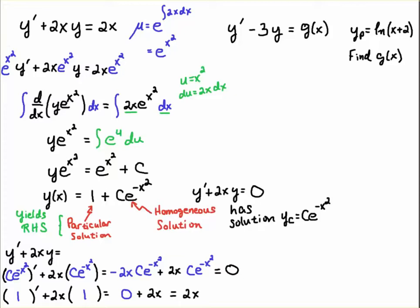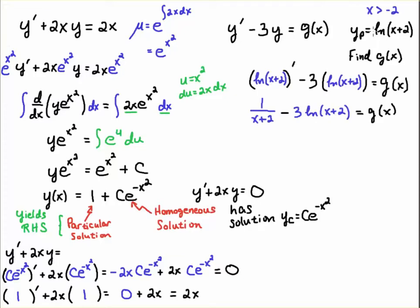Let's take a look at the example on the right. I have a particular solution here of natural log of x plus 2. You're going to plug it in — you don't know what the right-hand side is, you're just told it's some function g of x. We're going to plug this particular solution into the left-hand side to get g of x, because that's what we're asked to find. When I plug natural log of x plus 2 into the differential operator on the left, I take the derivative of natural log and get 1 over x plus 2, and I plug natural log of x plus 2 into the other term, multiplying by 3. That gives us the right-hand side. The particular solution yields the right-hand side because the homogeneous part would get annihilated.